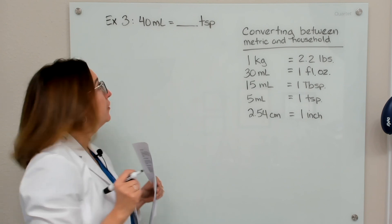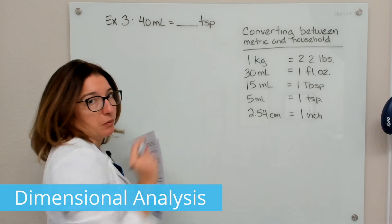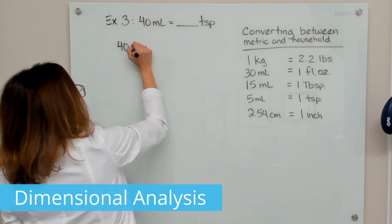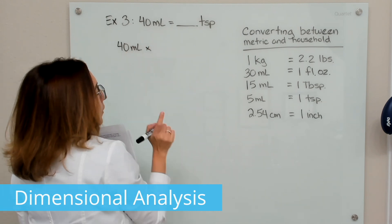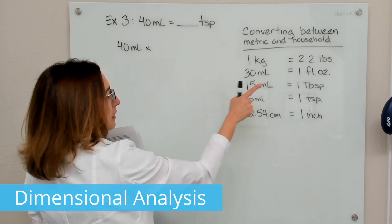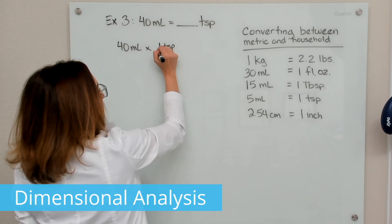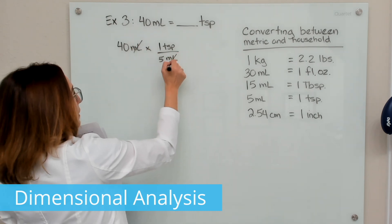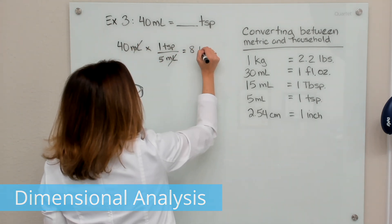Our third example problem: we want to go from 40 milliliters to teaspoons. With dimensional analysis, we write down our current units of measure — 40 milliliters — and use the conversion factor five milliliters equals one teaspoon. So we multiply by one teaspoon over five milliliters, which allows us to cross off the milliliters. When we multiply this out, we end up with eight teaspoons.